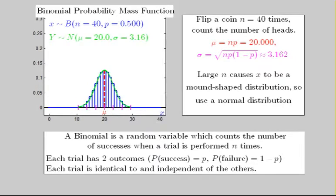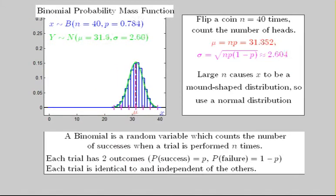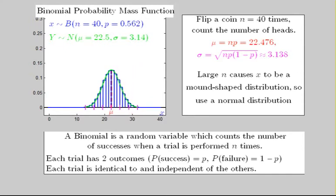The final case shown here has n equal to 40 tosses. Notice how the distribution is perfectly mound-shaped. In these cases, a continuous normal distribution, shown here in green, can be used to compute probabilities of the binomial x.